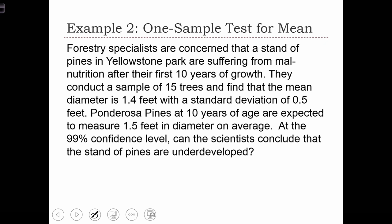So let's see what are the sample statistics. They took a sample of 15 trees, so n equals 15. The sample size is 15, and they found that the average diameter, x-bar, was 1.4 feet and that the standard deviation was 0.5 feet. They want to be 99% confident, which is going to imply alpha equals 1 minus 0.99 equals 1%. So alpha in this case is going to equal 1%.